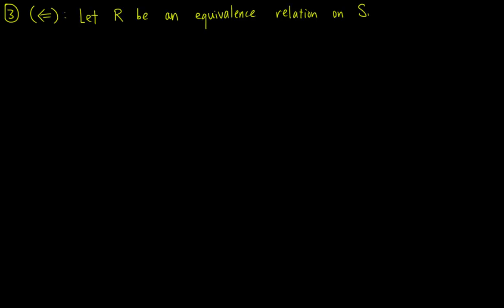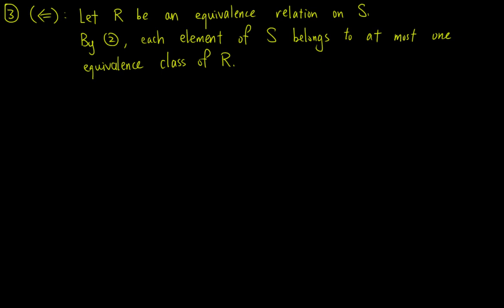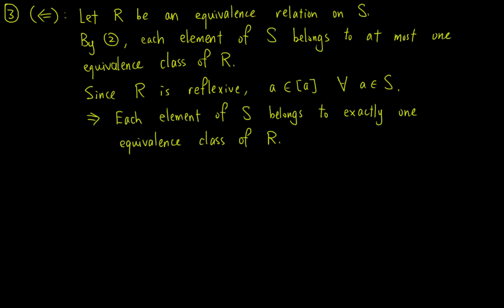For the third point, we show the implication in both directions. First, let R be an equivalence relation on S. By the second result, each element of S belongs to at most one equivalence class of R. Since R is reflexive, A lies in the equivalence class of A for all A in S. So each element of S belongs to exactly one equivalence class of R, which means S/R is a partition on S.